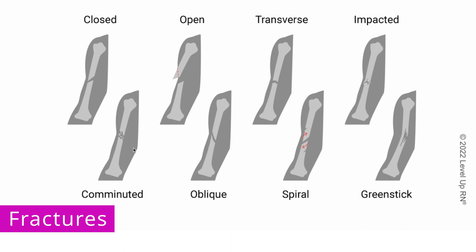A comminuted fracture results in two or more pieces. An oblique fracture is a fracture that occurs at an angle. A spiral fracture occurs due to a twisting motion and is very often a sign of abuse. So if a child presents with a spiral fracture in their arm, you definitely need to assess for a possible abuse situation.